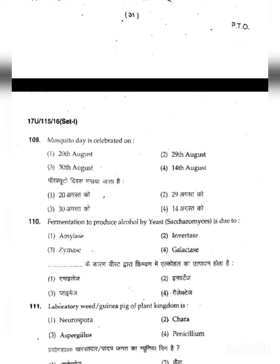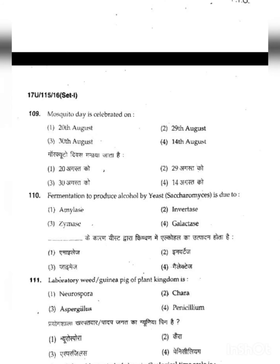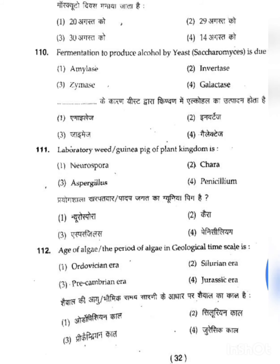Question 110: Fermentation to produce alcohol by yeast occurs due to — this is done by zymase. Zymase is an enzyme that acts as a catalyst in fermentation, converting sugar into ethanol and carbon dioxide. So zymase catalyzes the formation of alcohol. The third option, zymase, is absolutely correct for question 110.